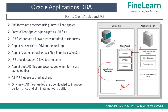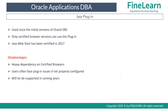Now that we understand the forms client applet, remember that the forms client applet runs with the help of something called the Java plugin. If you want to use the forms client applet, you have to make sure that the Java plugin is first configured. To open forms, as mentioned, there are two ways: either use the Java plugin or use Java web start. Java web start has been certified since 2017, and even now most customers are still using the Java plugin.